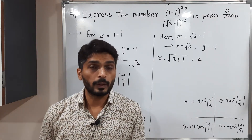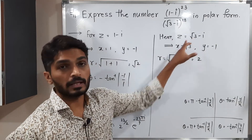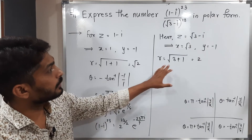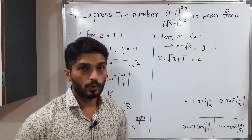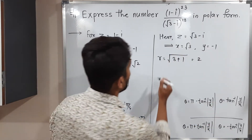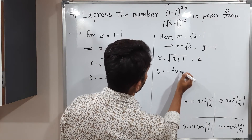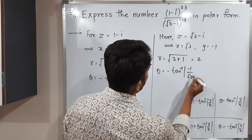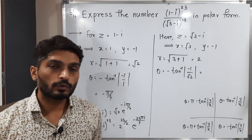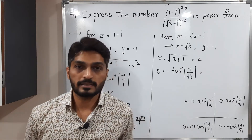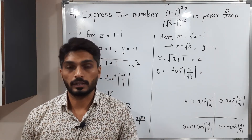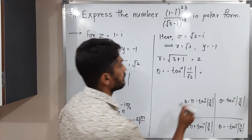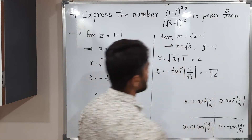Before finding theta, we note where z lies. x is positive and y is negative, so this complex number again lies in the fourth quadrant. Therefore the formula for theta is minus tan inverse of mod(y/x). y is minus 1 and x is root 3, so we need tan inverse of 1 by root 3. The value of tan inverse of 1 by root 3 is pi by 6, so theta equals minus pi by 6.